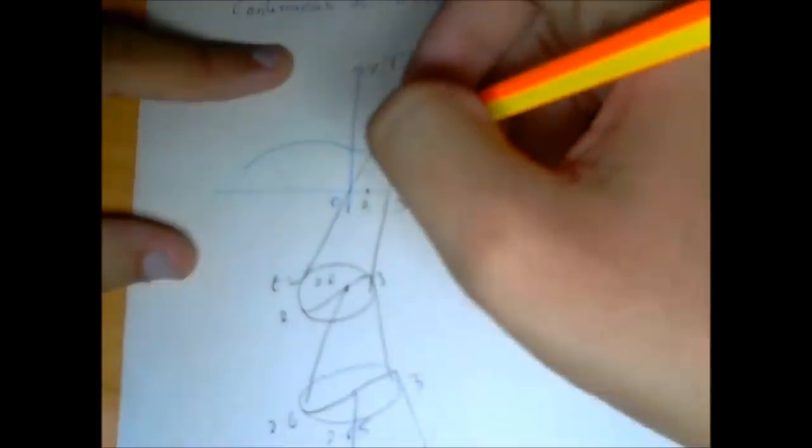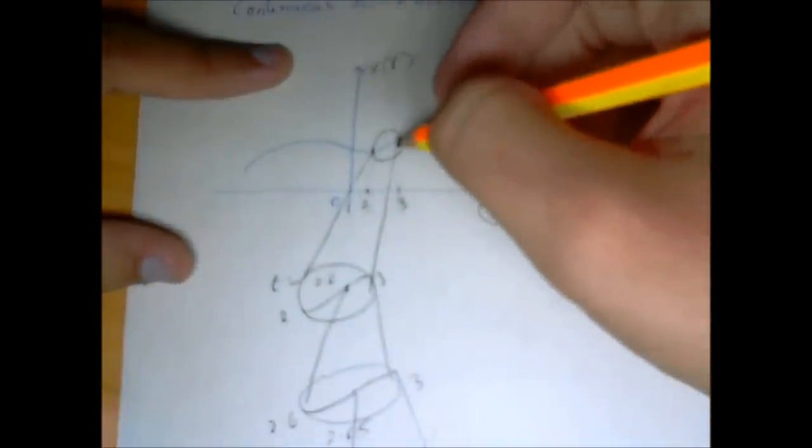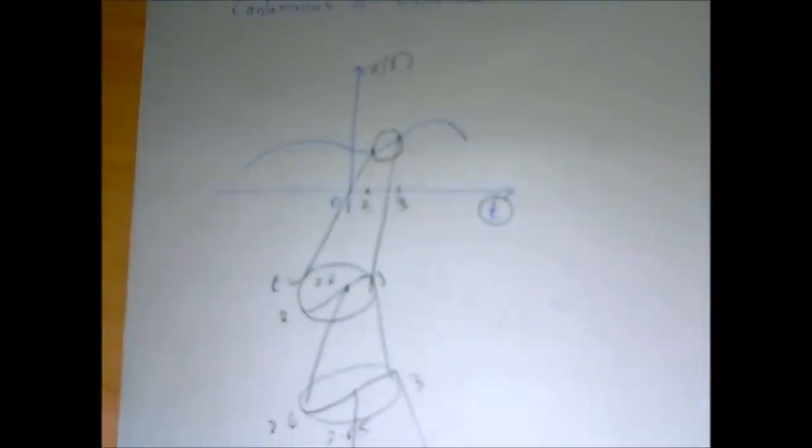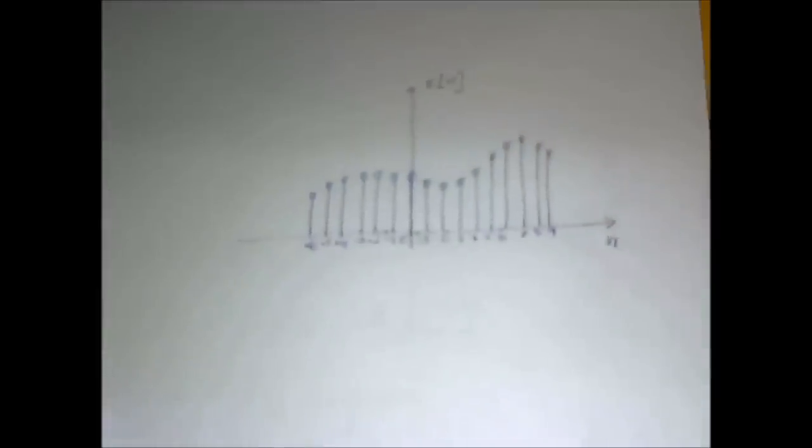I can keep getting any value I want. That's what continuum means essentially. You can get any value between any two points. There is no limit to that. On the other hand, let's look at a discrete time signal.